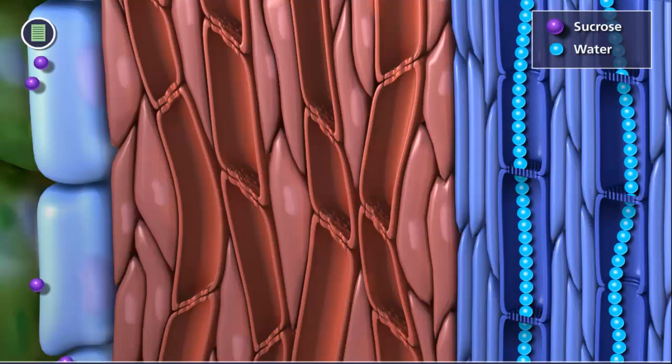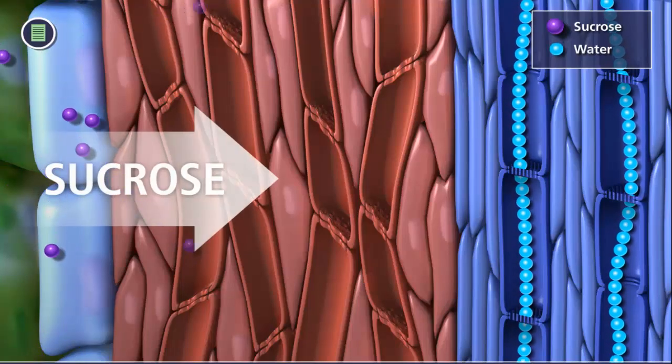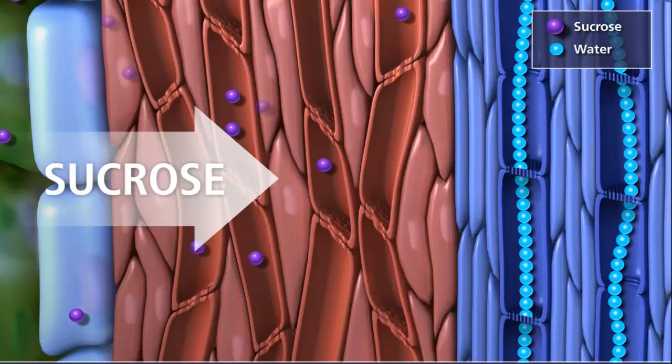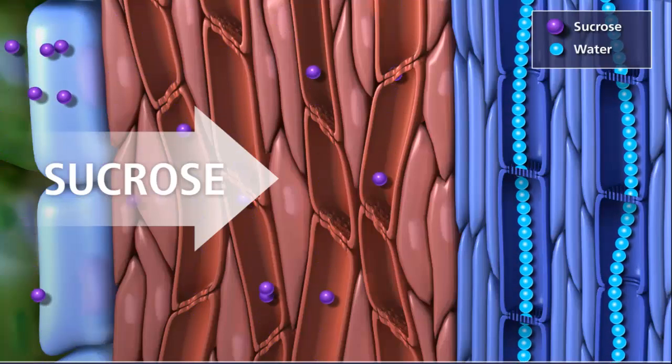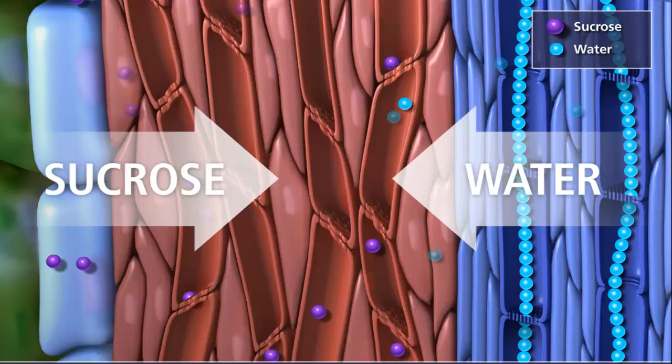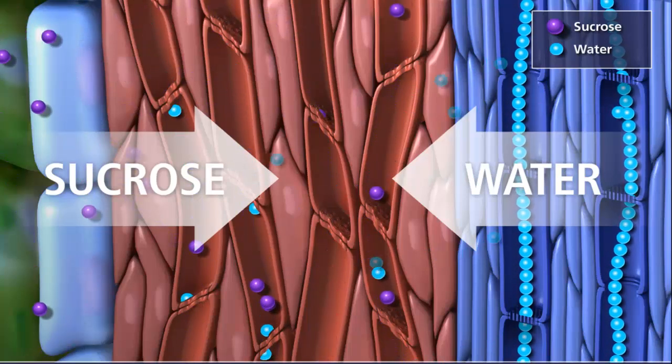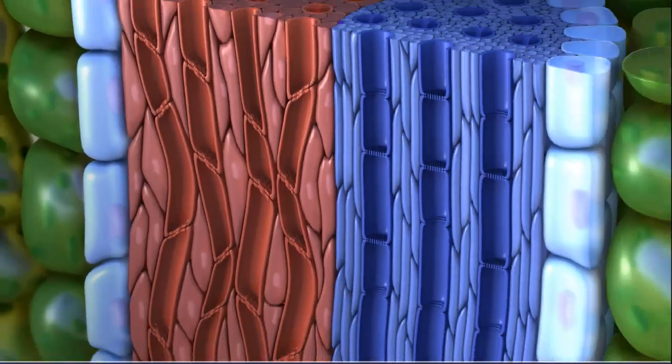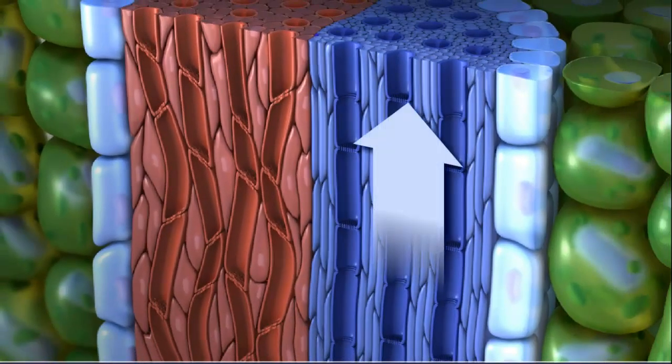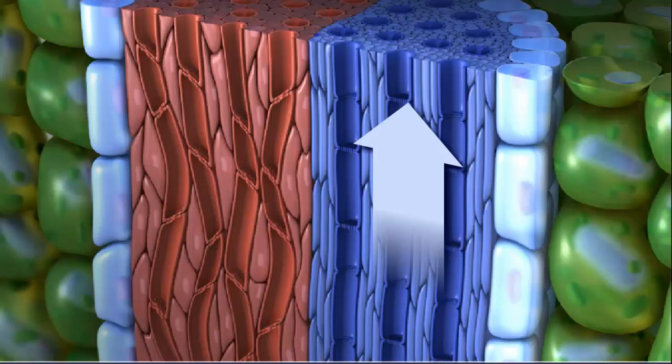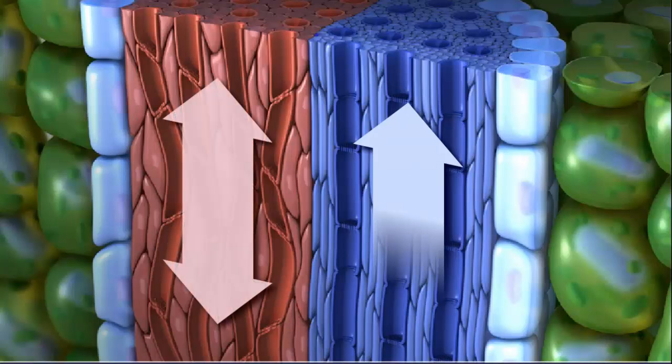Turgor pressure increases in the sieve tube members as sucrose from surrounding cells is brought into phloem through active transport. Water then enters phloem from xylem by osmosis, which drives the transport of carbohydrates in the phloem. Water movement in vessels is one way, while transport in sieve tube members can go in both directions.